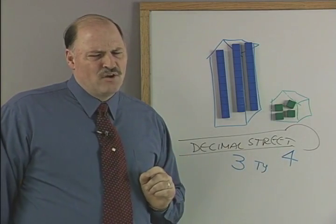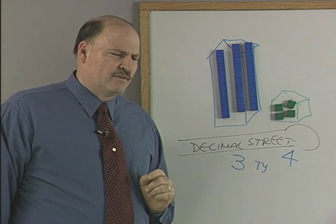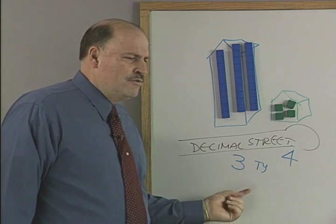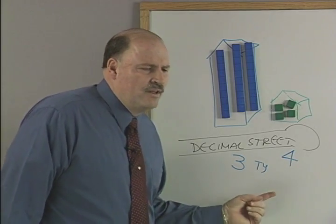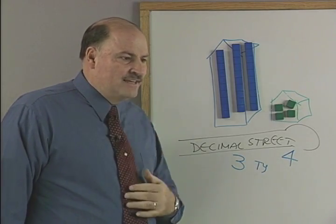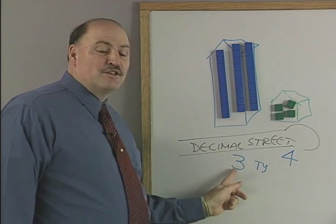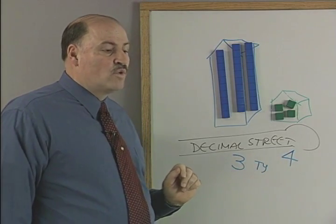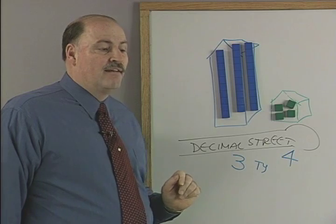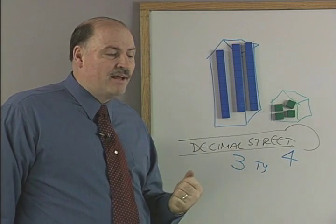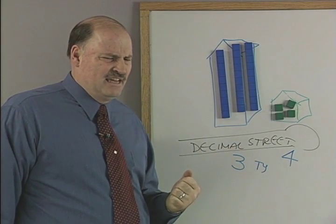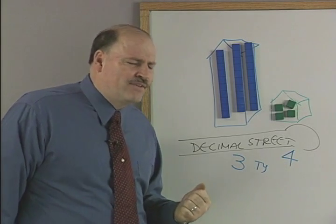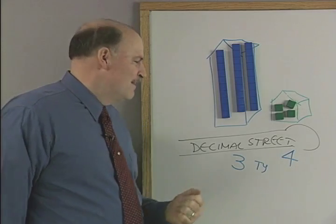It turns out that if you say three-T real quickly several times, what do you get? Three-T, three-T, three-T — thirty! So thirty means three-T. What does four-T mean? Forty. How about five-T? Fifty.